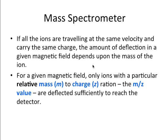So if all of the ions in the mass spectrometer are traveling at the same velocity and carry the same charge, the amount of deflection is going to depend on the mass of the ion. And that's really going to be the way that an analysis of a single element works. It's going to be separated into different beams depending upon the mass of each of those isotopes. For any given magnetic field, only ions with a particular mass-to-charge ratio are going to be deflected sufficiently to reach the detector, meaning they won't hit the walls of the channel.